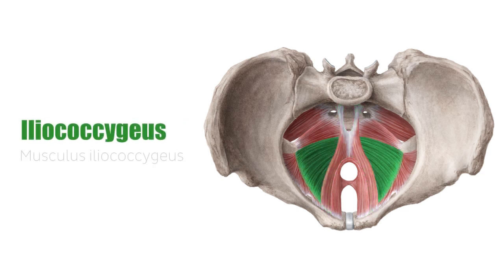The iliococcygeous muscle, also known as the coccygeous muscle, extends more laterally from the fascia of obturator internus muscle to the coccyx.